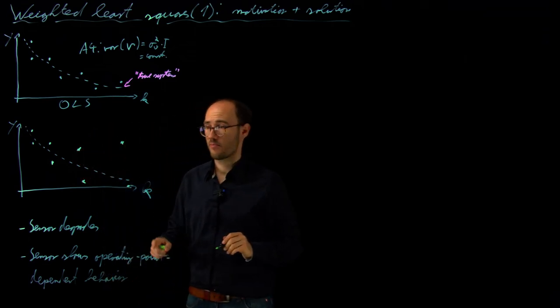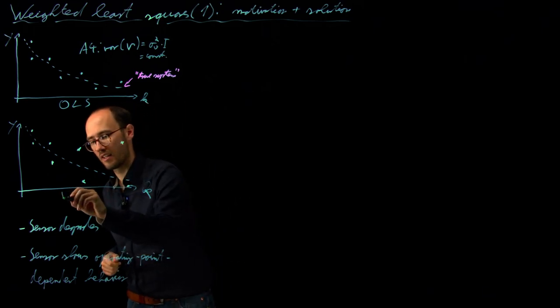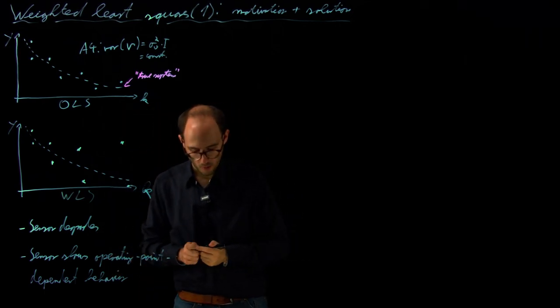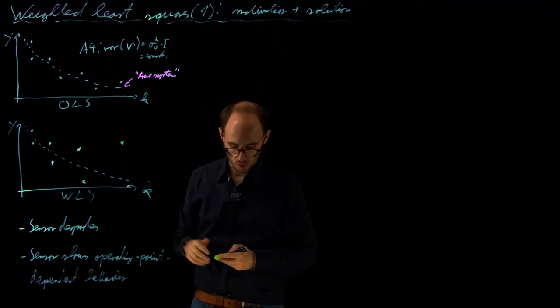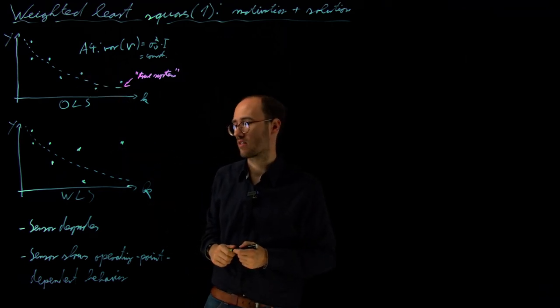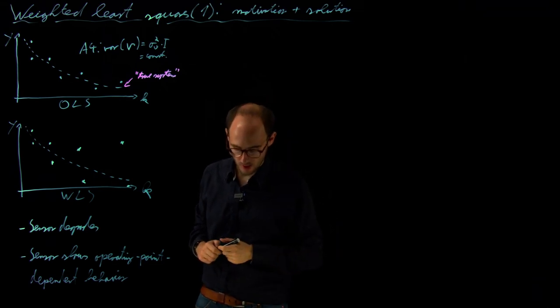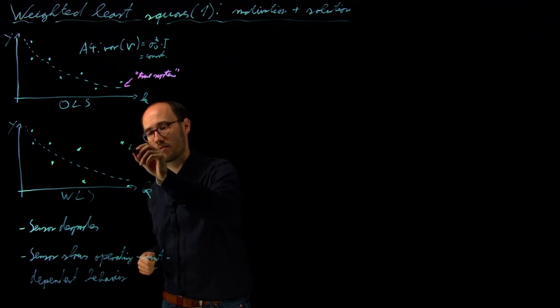In this case, which I've sketched here, which is the motivation for the WLS, the weighted least squares problem which we will sketch in the following, we have basically the problem that our assumption A4, which we have previously introduced in the discussion of the properties of the ordinary least squares, is harmed, is violated.